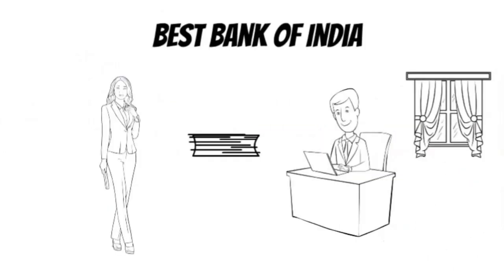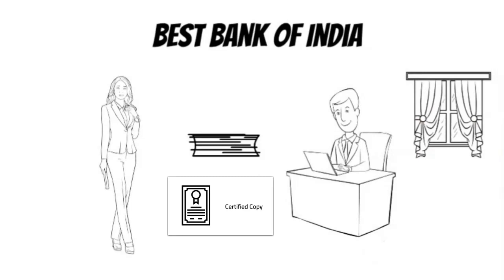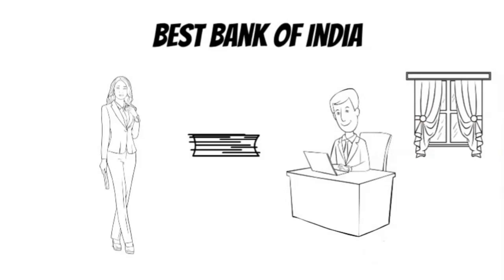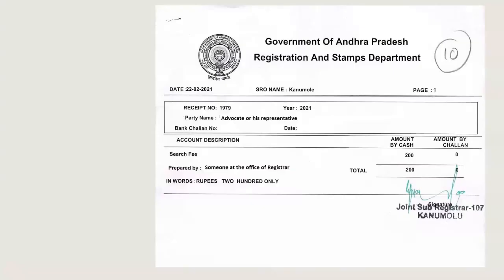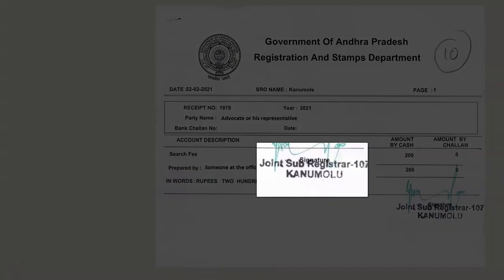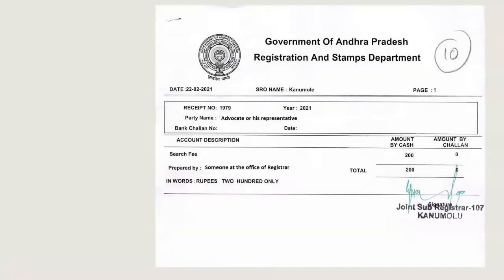Now if A wants to avail a mortgage loan and approaches you with the original document, first your advocate should get the certified copy from the registrar, then carry out a page-by-page verification comparing it with the original to check if they match. Not only that — he verifies the transactions against this property's plot number or DAG number. If the advocate has really conducted a search at the registrar office, he will submit a search receipt which looks like this. The issuer will vary depending on your location, and I emphasize on this search receipt for quite a few obvious reasons.